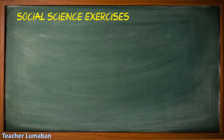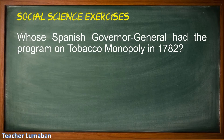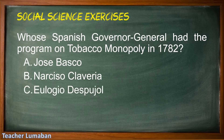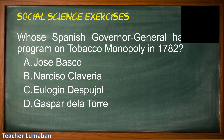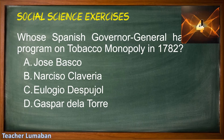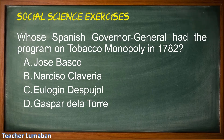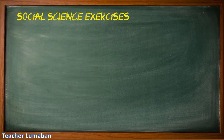Which Spanish governor general had the program on tobacco monopoly in 1782? Letter A: Jose Basco. Letter B: Narciso Claveria. Letter C: Julio de Despujol. Letter D: Gaspar de la Torre. Please choose the suitable answer in five seconds. Five, four, three, two, one. The correct answer is Letter A: Jose Basco.